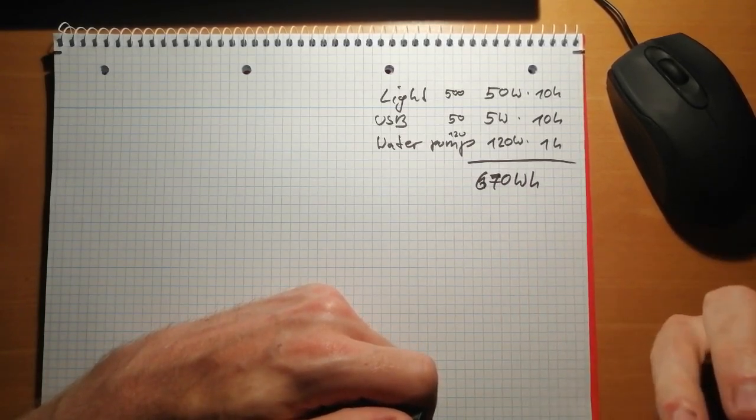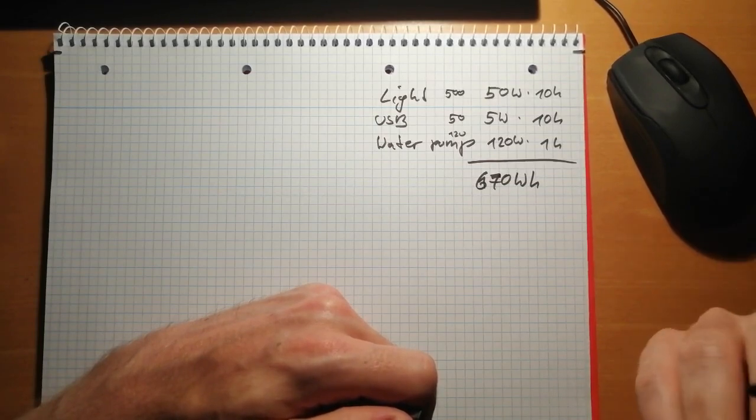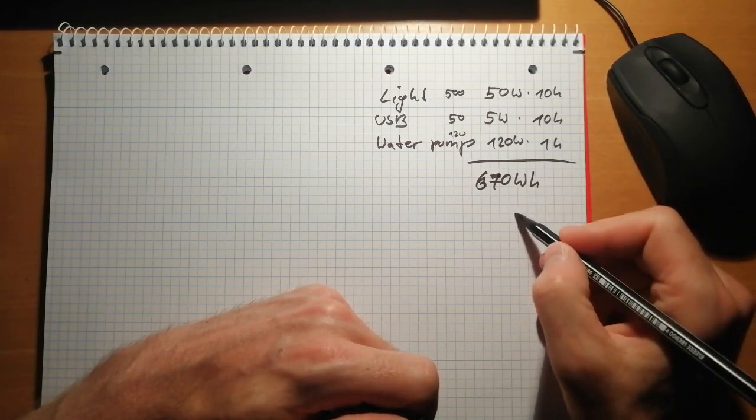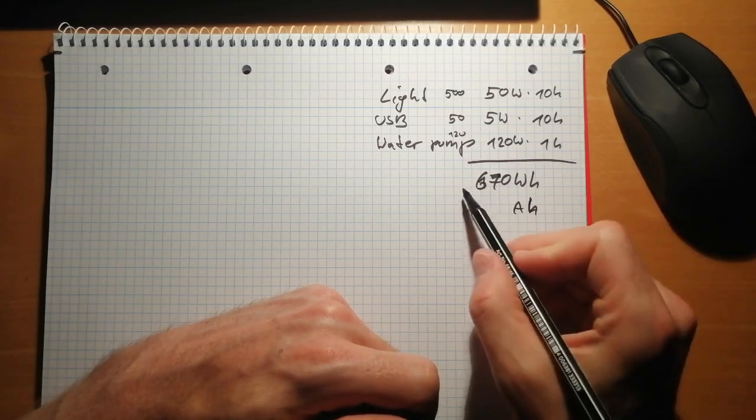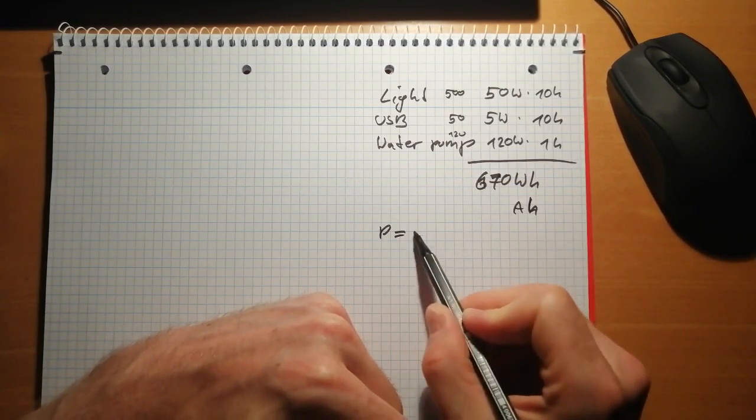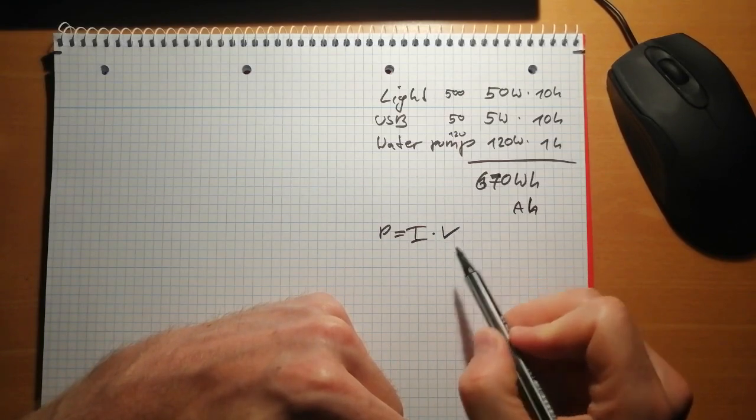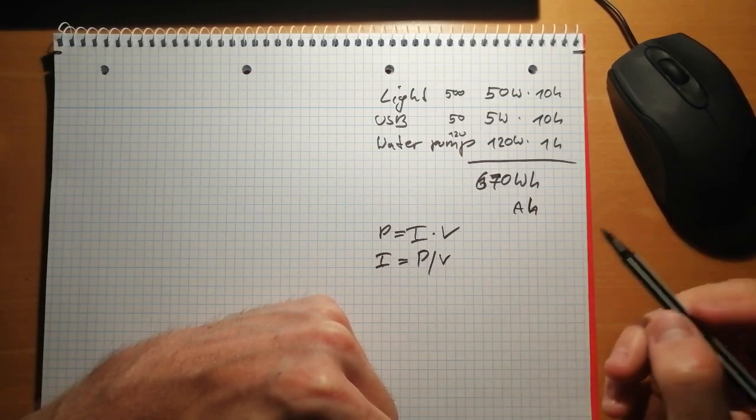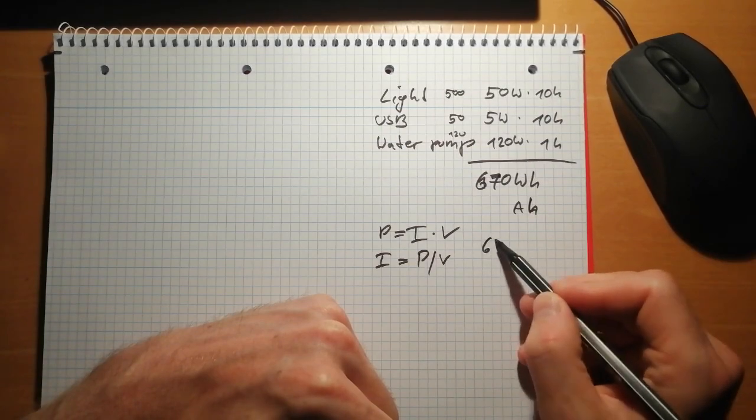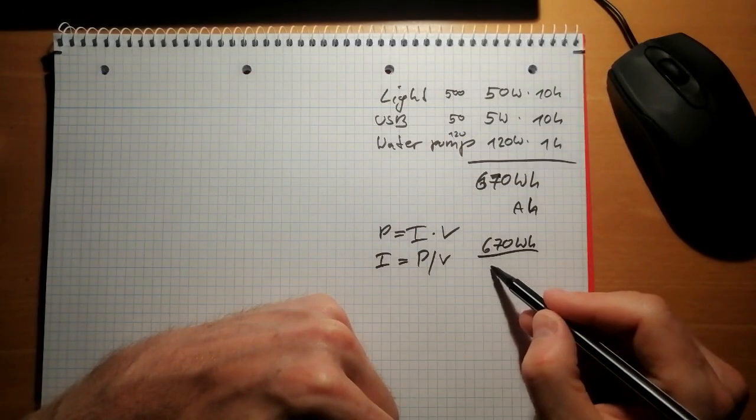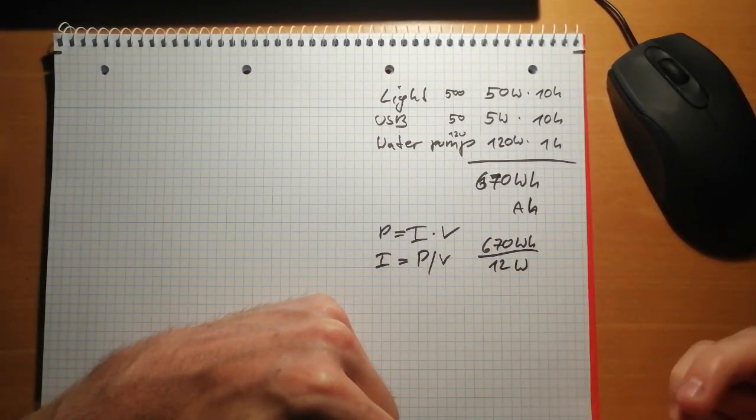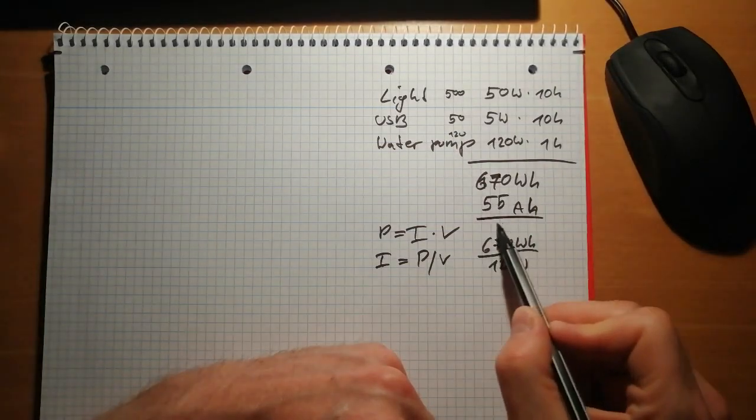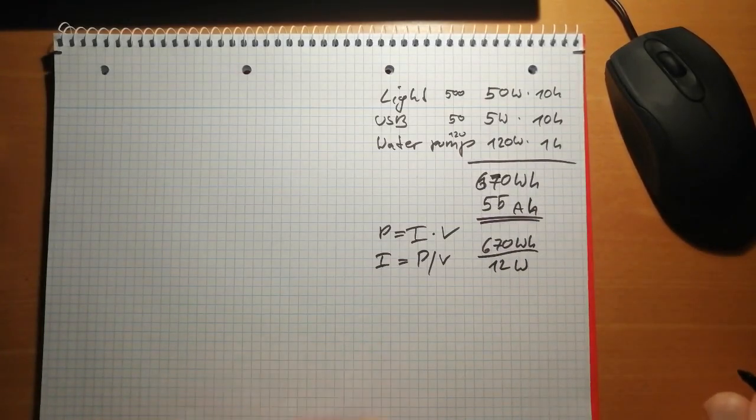As you know, most batteries are specified in amp hours, so the capacity of the battery. If you want to convert watt hours to amp hours, we have to apply the equation power equals current times voltage. And if you want to get the current, we have power divided by voltage. So in this case we have 670 watt hours divided by 12 volts, that is around 55 amp hours. So that's our key number that we have to consider for our battery.